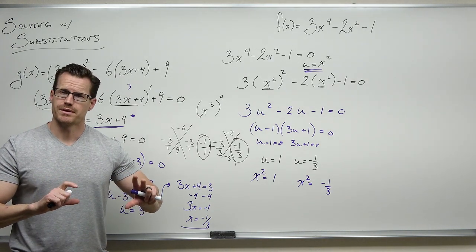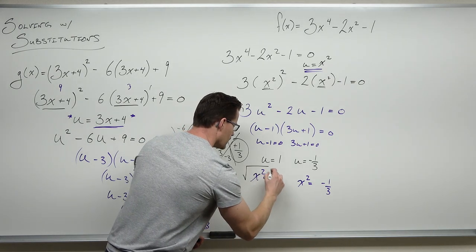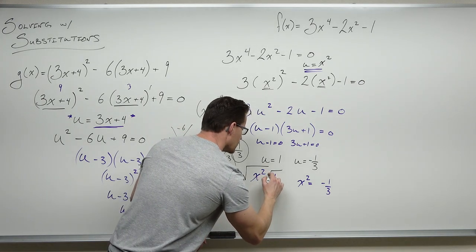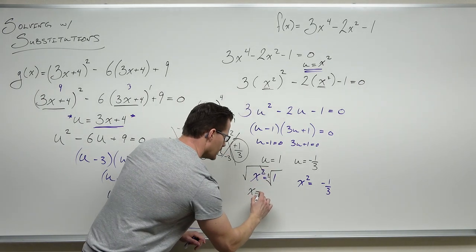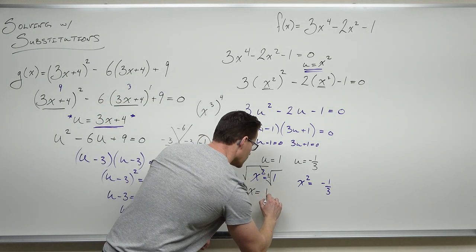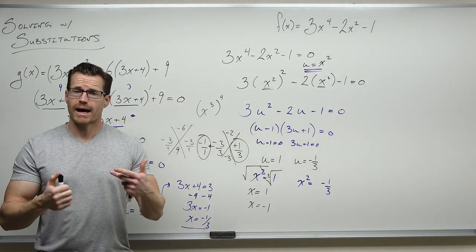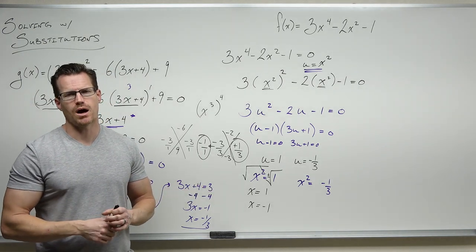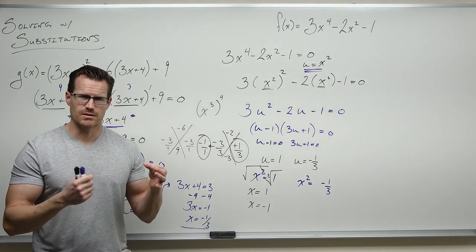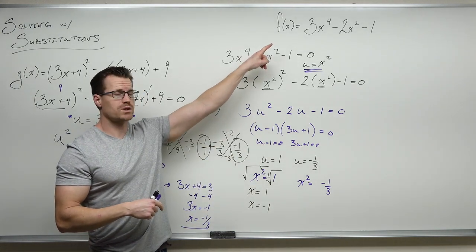For x squared equals 1, we take the square root of both sides — and we always need that plus and minus. The square root of 1 is 1, so we get positive and negative 1. Are those real solutions and x-intercepts? Yes — they're real numbers, they're distinct, and they're two actual x-intercepts of this quartic function. A degree-4 polynomial might look like it goes up-down-up or just like a u-shape, but this one has two real crossings at x equals negative 1 and x equals positive 1.